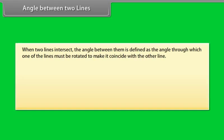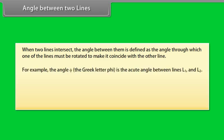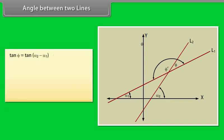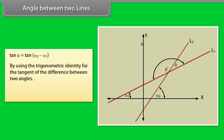Angle between two lines: When two lines intersect, the angle between them is defined as the angle through which one of the lines must be rotated to make it coincide with the other line. The angle phi is the angle between lines L1 and L2, where alpha 2 equals alpha 1 plus phi. Therefore phi equals alpha 2 minus alpha 1. From the slopes of lines L1 and L2, tan phi equals tan(alpha 2 minus alpha 1). Using the trigonometric identity for the tangent of the difference of two angles: tan phi equals (tan alpha 2 minus tan alpha 1) divided by (1 plus tan alpha 1 times tan alpha 2).